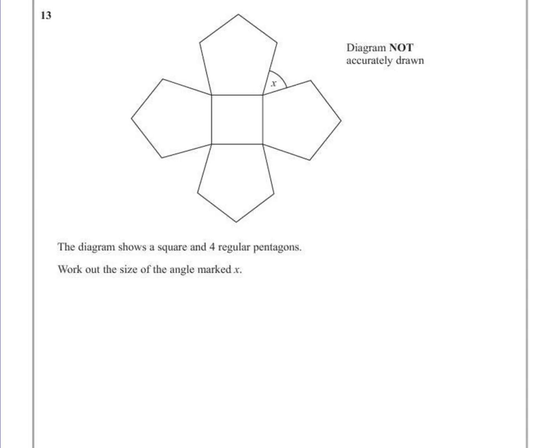Notice that the diagram is not accurately drawn, so there's no point taking out your protractors. I wouldn't try drawing the shape either. You should try and work it out, calculate it using facts to do with interior angles.